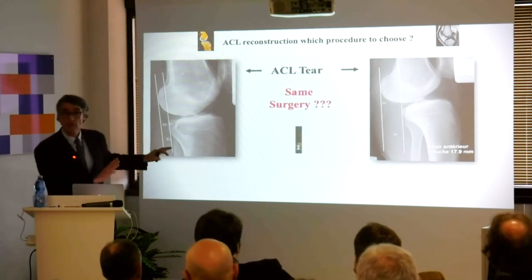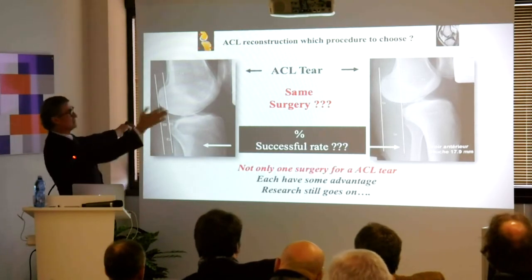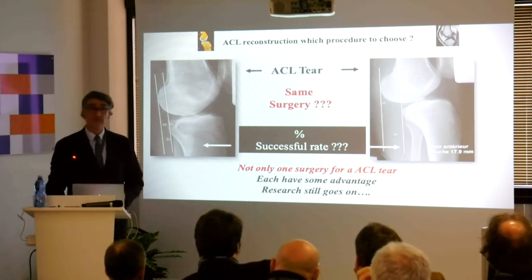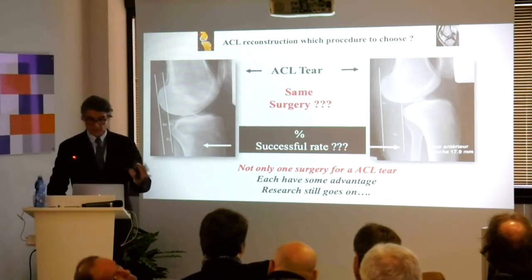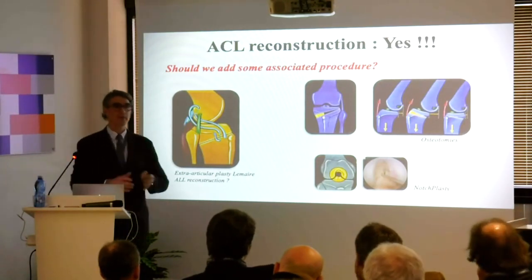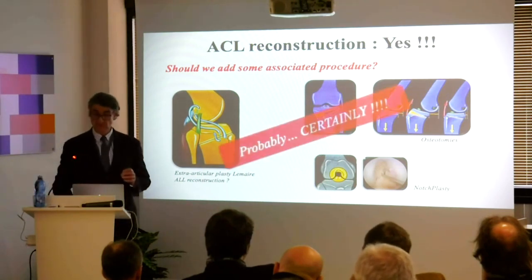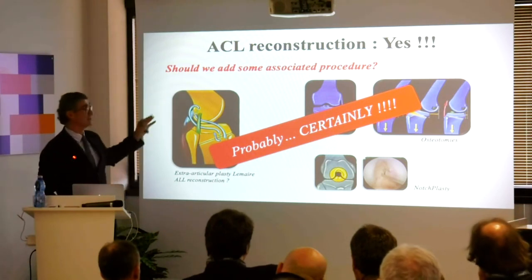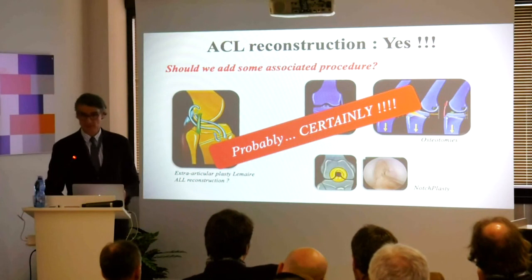Definitely, with your evaluation and laximetry — laximetry is important — you cannot do the same surgery for a patient with 5-7 millimeters as for one with 18 millimeters. The one with 18 mm has much more risk of rupture. So evaluate your patient. Doing an ACL reconstruction: if you have a soft Lachman and a little bit of pivot shift, yes, we can do an ACL. But sometimes you have to add additional procedures — it could be an extraarticuloplasty or an anterolateral plasty, it could be osteotomies, it could be notchplasties.